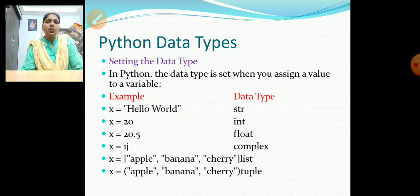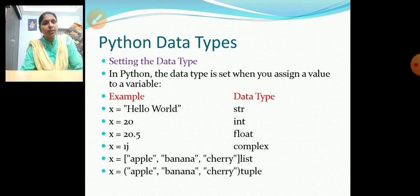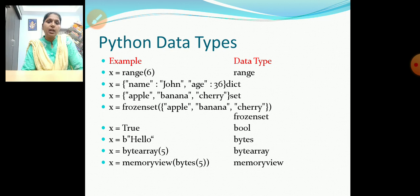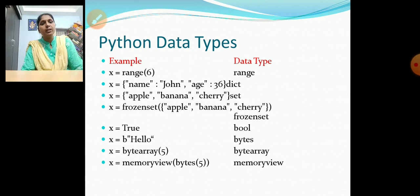When setting data types, the type is set when we assign a value. For example: x = 'Hello World' is str; x = 20 is int; x = 20.5 is float; x = 1j is complex; x = ['apple', 'banana', 'cherry'] is list; x = ('apple', 'banana', 'cherry') is tuple; range() is range; curly brackets with key-value pairs is dict; curly brackets with unique values is set; frozenset() is frozenset; True or False is bool; b'hello' is bytes; bytearray and memoryview are binary types.